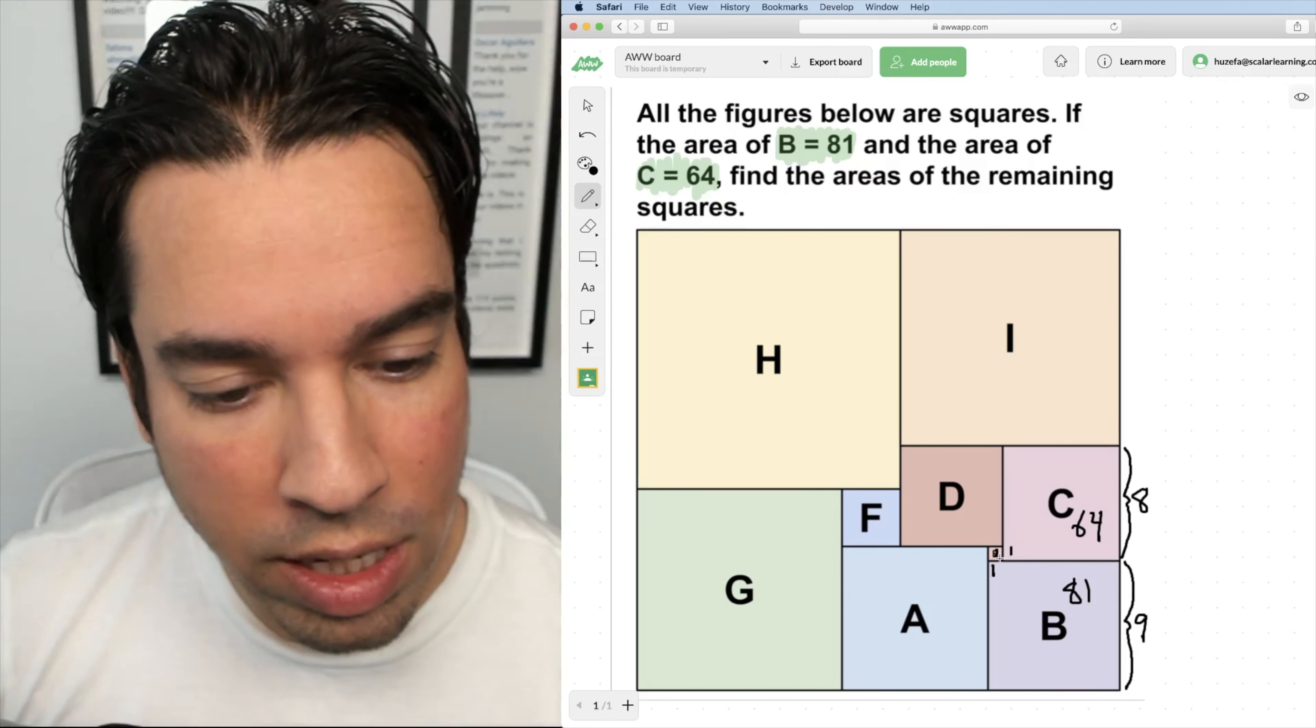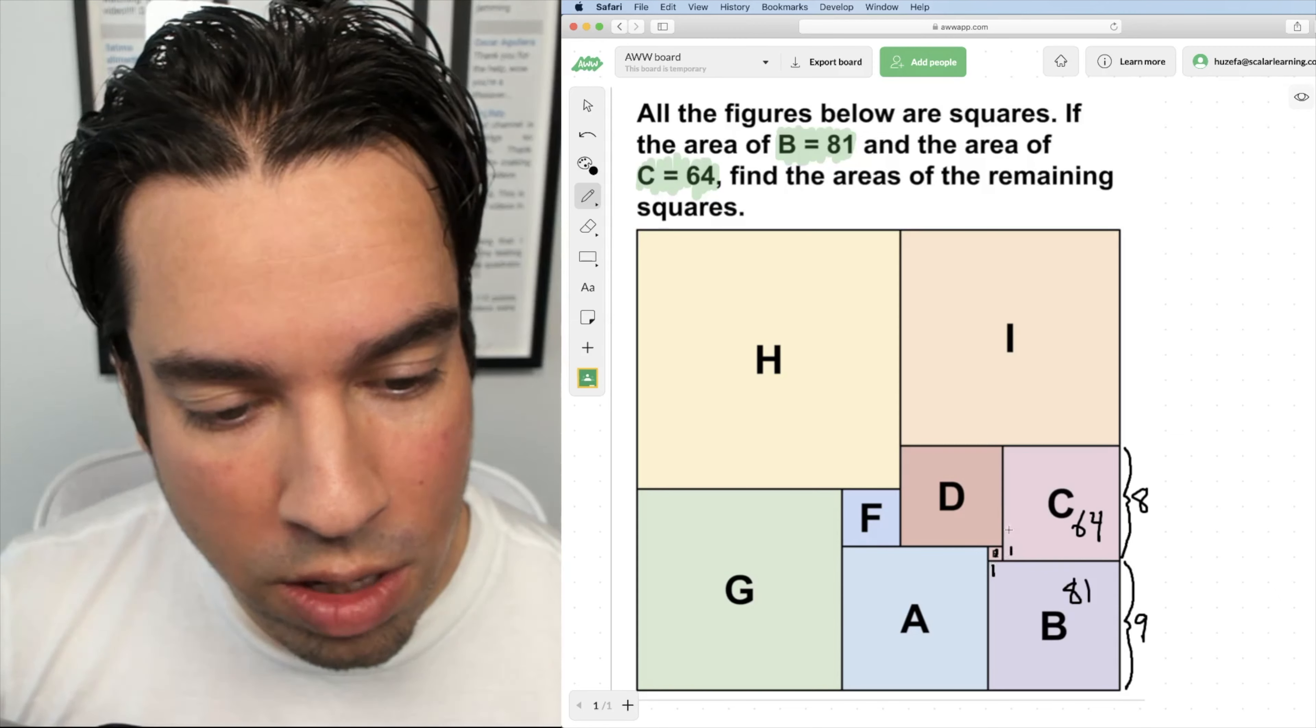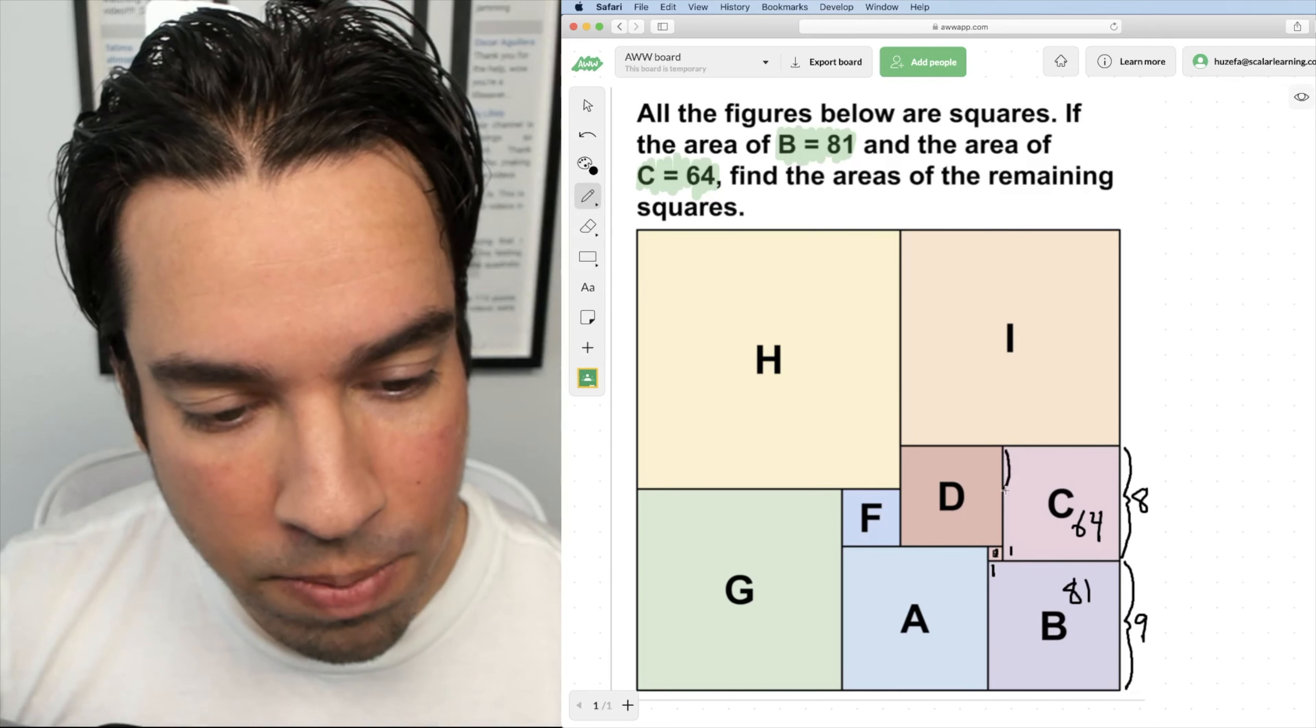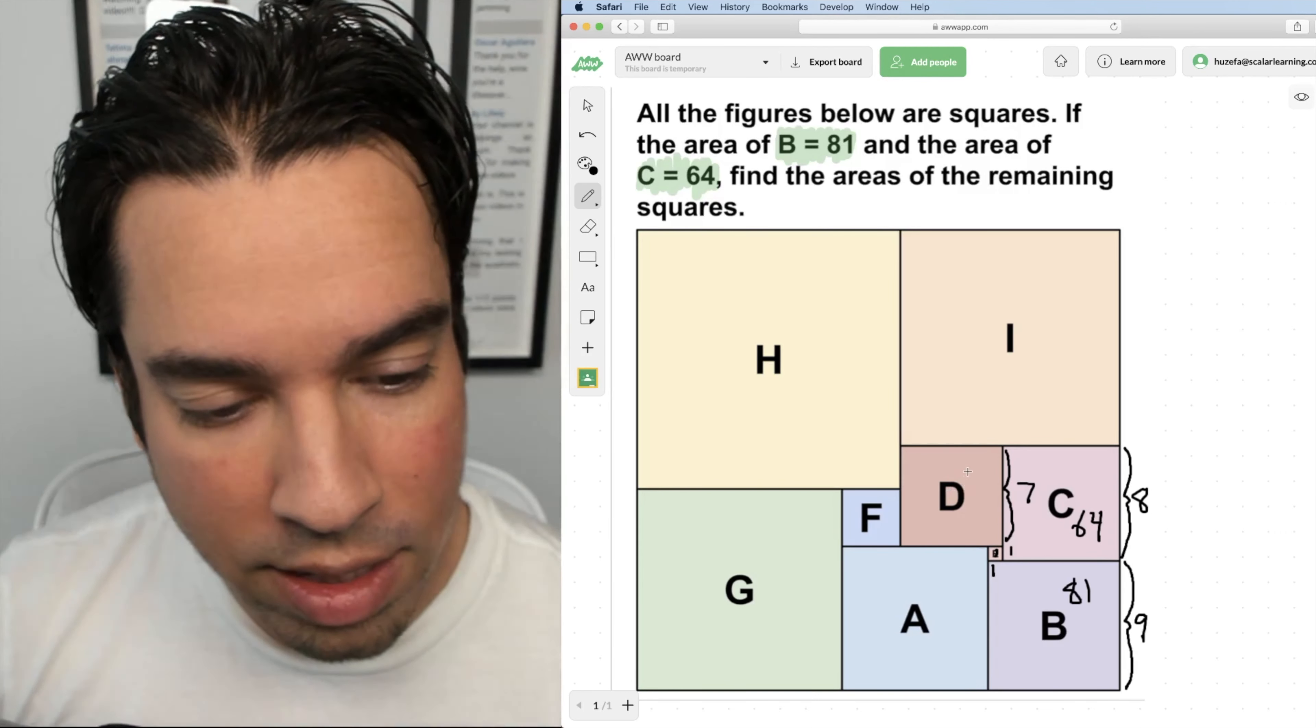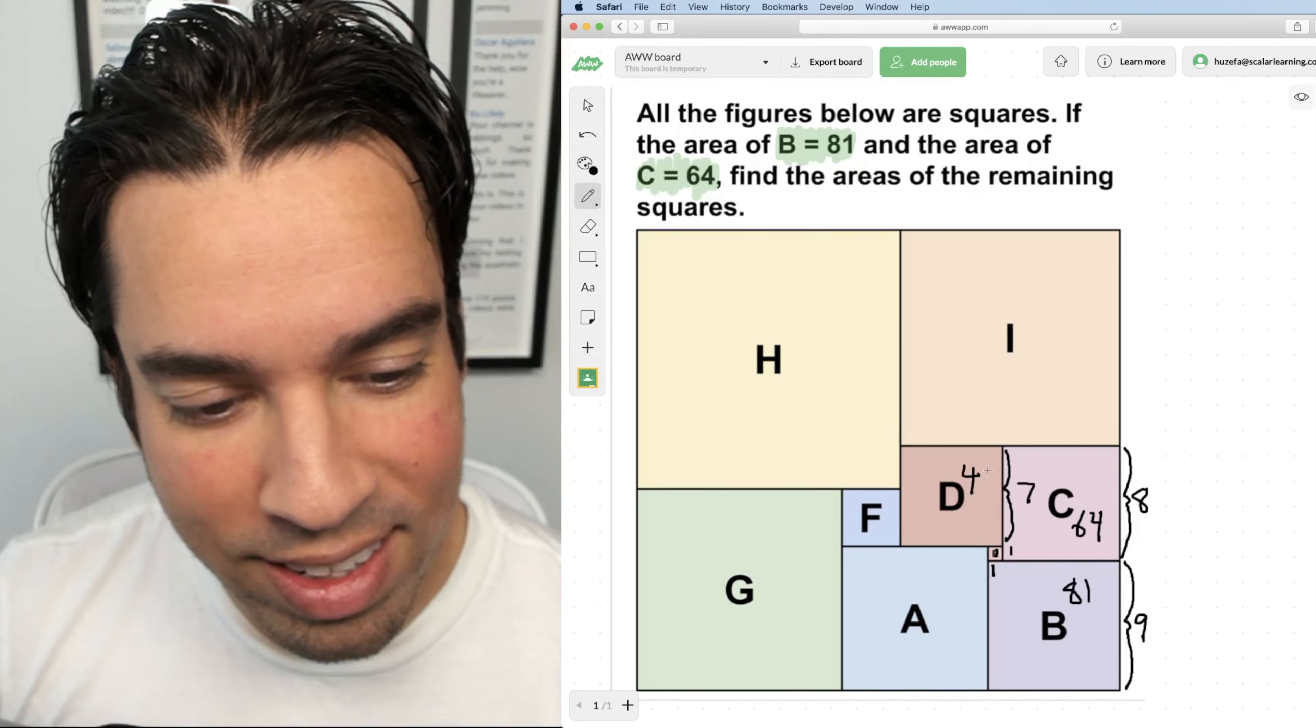Next, we can go to D. If I know that E is a one by one, I know that the length of D is one less than eight, which is seven, making D have an area of 49.